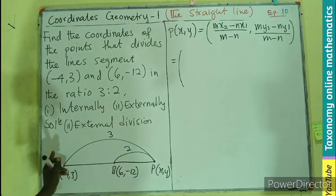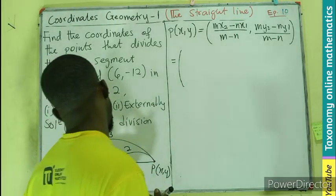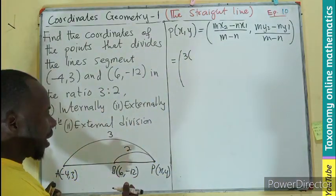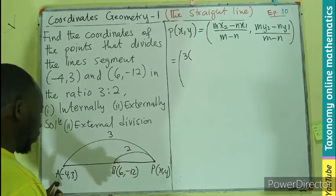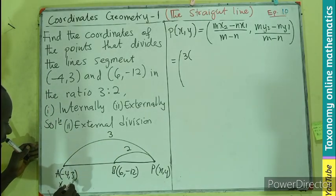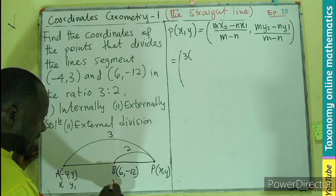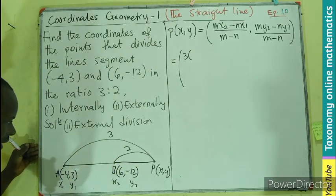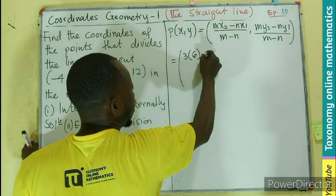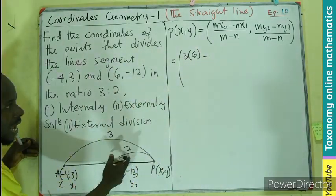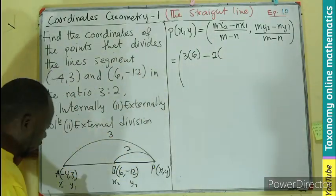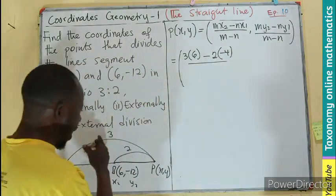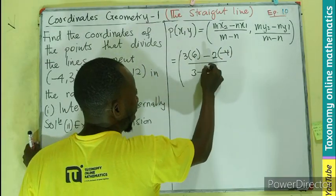So here I'll be having M, which will still be the point is 3. So we are moving all the way, so M will still be 3. And that will give you 3 into brackets. Where is it? X2. We have our X1, Y1, X2, Y2. So your X2, what will it be? It will be 6. So 6 minus N, which will be 2 times X1, -4, all divided by M minus N, so 3 minus 2.